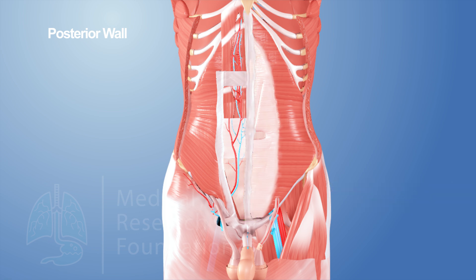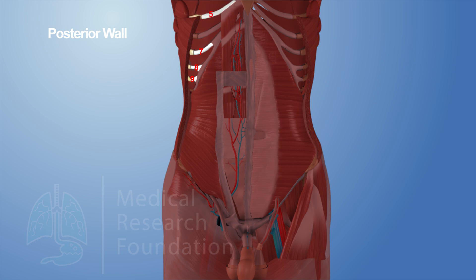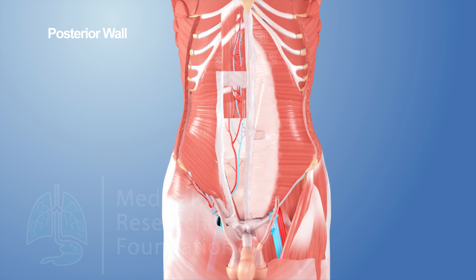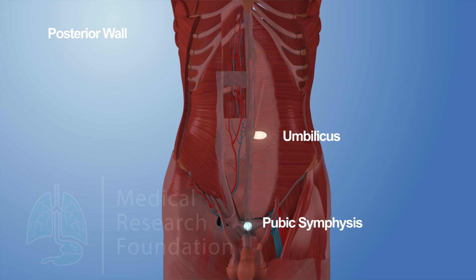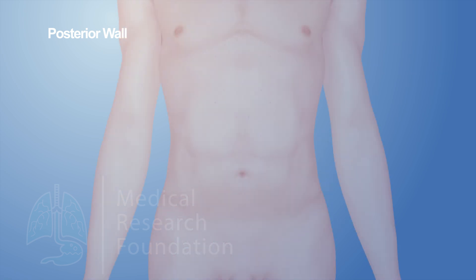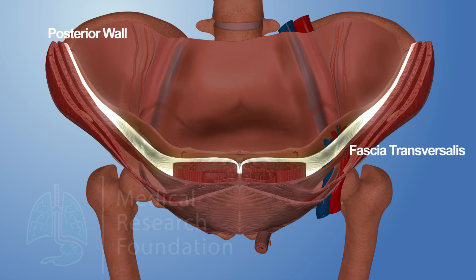Above, the posterior wall is attached to the costal margin — the seventh, eighth, and ninth costal cartilages — and thus the muscle lies directly on the fifth, sixth, and seventh costal cartilages. Below, it presents a free curved margin with concavity facing inferiorly, called the arcuate line, located between the umbilicus and pubic symphysis. Below this level, the muscle lies directly on the fascia transversalis.